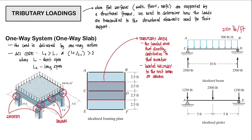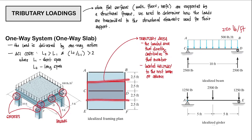Now we're going to determine the loadings supported by our beams and girders. Let's start with beam CD. The first step is to determine the tributary area of beam CD. As stated earlier, the tributary area has boundaries located halfway to the next beam. For the upper boundary, halfway to beam AB, it would be 2.5 feet. For the lower boundary, halfway to beam EF, again it would be 2.5 feet. Whatever loading is placed in this area will be supported by beam CD.